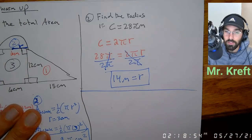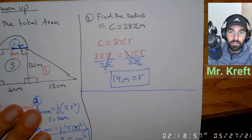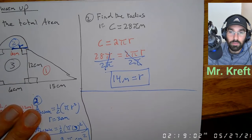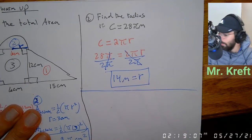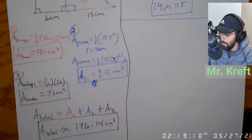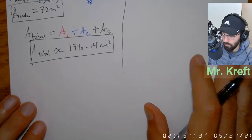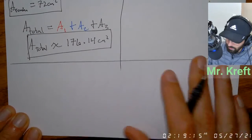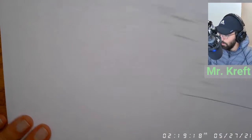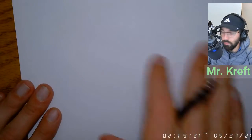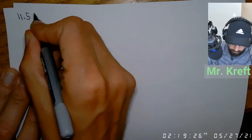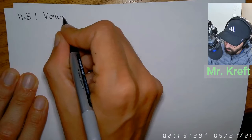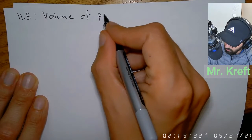Does anybody have questions about this? This is also going to be on your final exam — using those equations, manipulating them, and solving for different variables. All right, we're going to be doing some new stuff with volume now: section 11.5, the volume of prisms and cylinders.